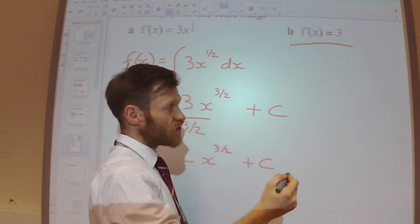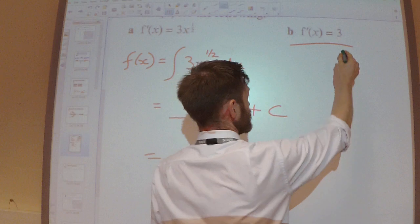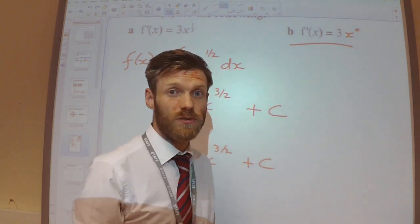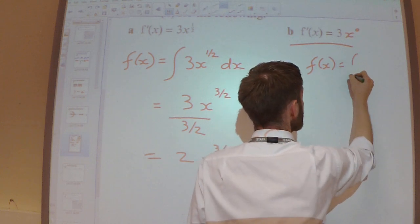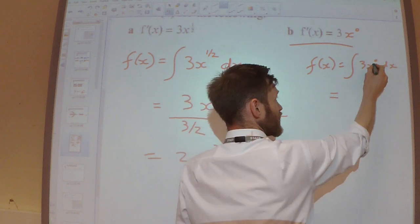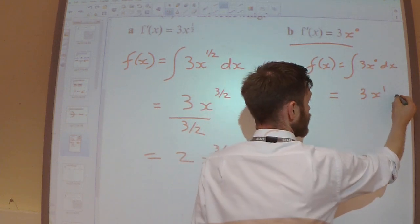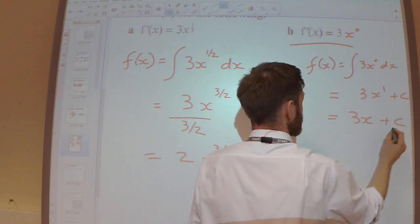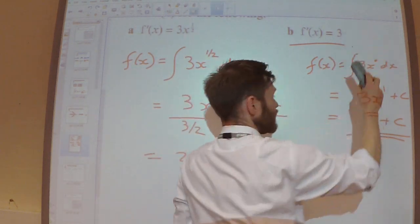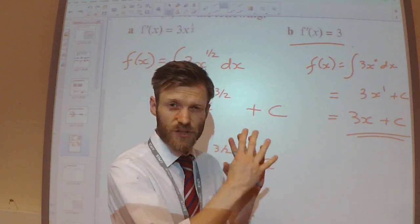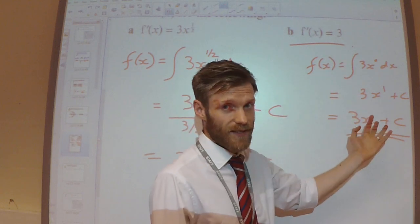Next example: f'(x) = 3. Notice there's no x there at all. You could think of this as 3x⁰, since x⁰ = 1. When we integrate: raise the power, so it's x¹ now. Divide by the new power — divide by 1 — so still a 3 there. That gives 3x + c. This should make sense because if you differentiate 3x, you get 3. Hopefully it's clear that if you integrate 3, you get 3x plus the constant.